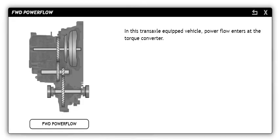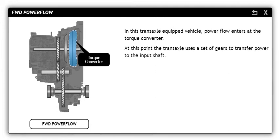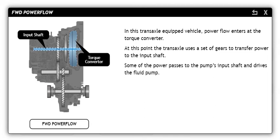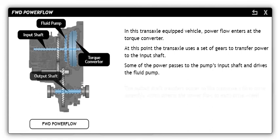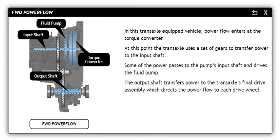In a transaxle-equipped vehicle, power flow enters at the torque converter. At this point, the transaxle uses a set of gears to transfer power to the input shaft. Some of the power passes to the pump's input shaft and drives the fluid pump. The output shaft transfers power to the transaxle's final drive assembly, which directs the power flow to each drive wheel.